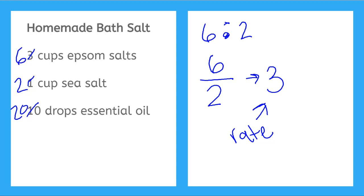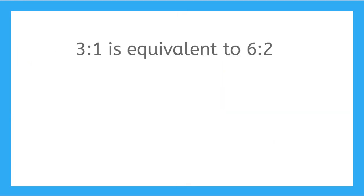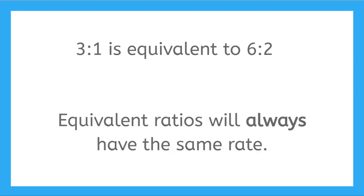Why does the rate stay the same? The rate stays the same because three to one and six to two are equivalent ratios. In this case, we multiply both sides of the ratio three to one by two, and we get the ratio six to two. Equivalent ratios will always have the same rate.